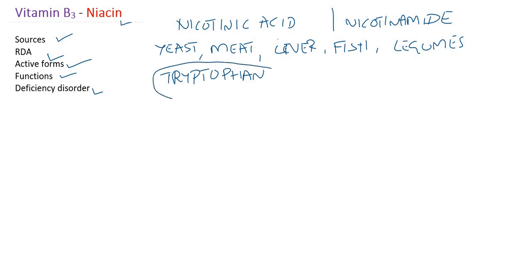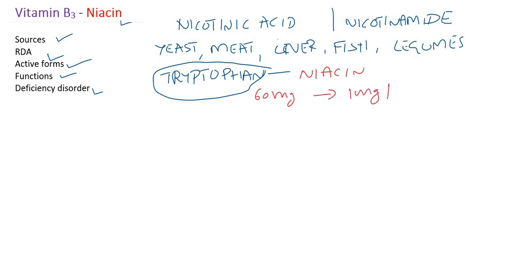From tryptophan, our body can synthesize niacin. About 60 milligrams of tryptophan, after complete metabolization, can give 1 milligram of niacin. That means approximately 10% of our daily niacin requirement can be synthesized by the body from tryptophan.